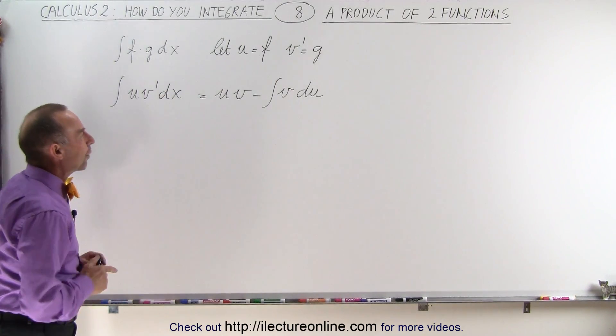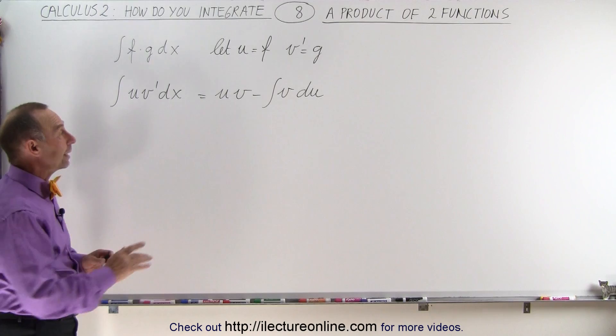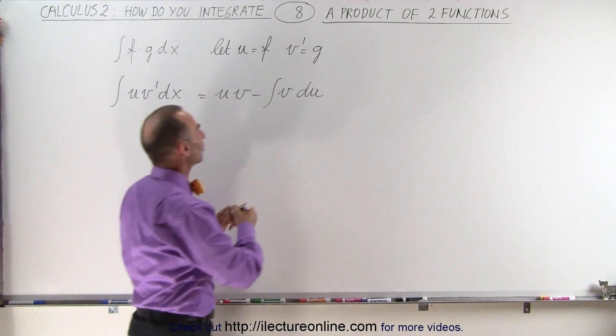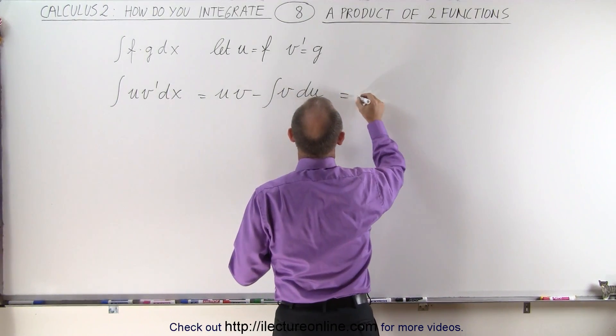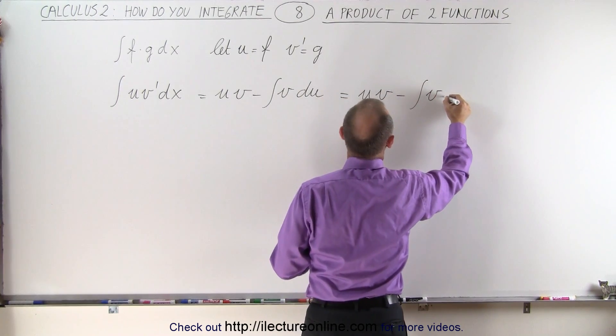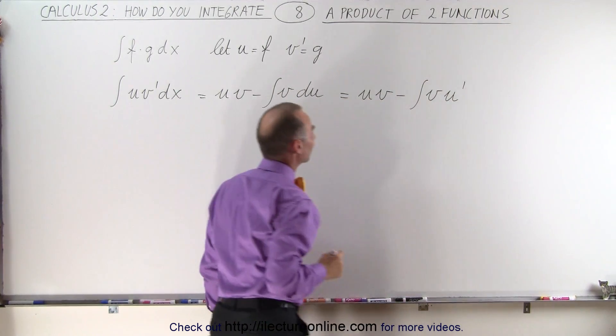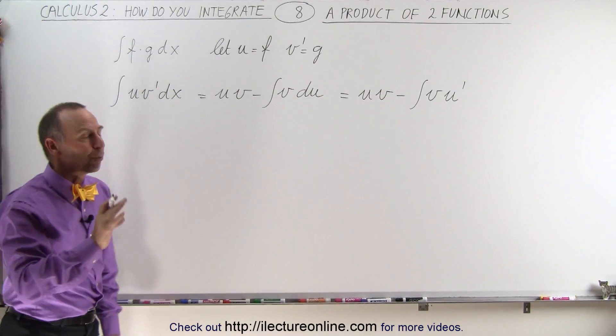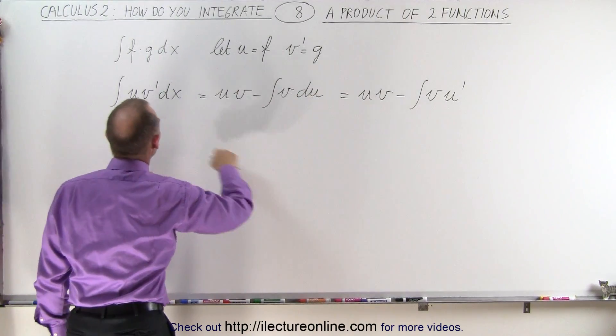How do we know that this is correct? Well, we can do the following thing. Let's first rewrite this. We're going to write this as u times v minus the integral of v times the derivative of u. And now we're going to take the derivative of that result and we should get back what we started with.